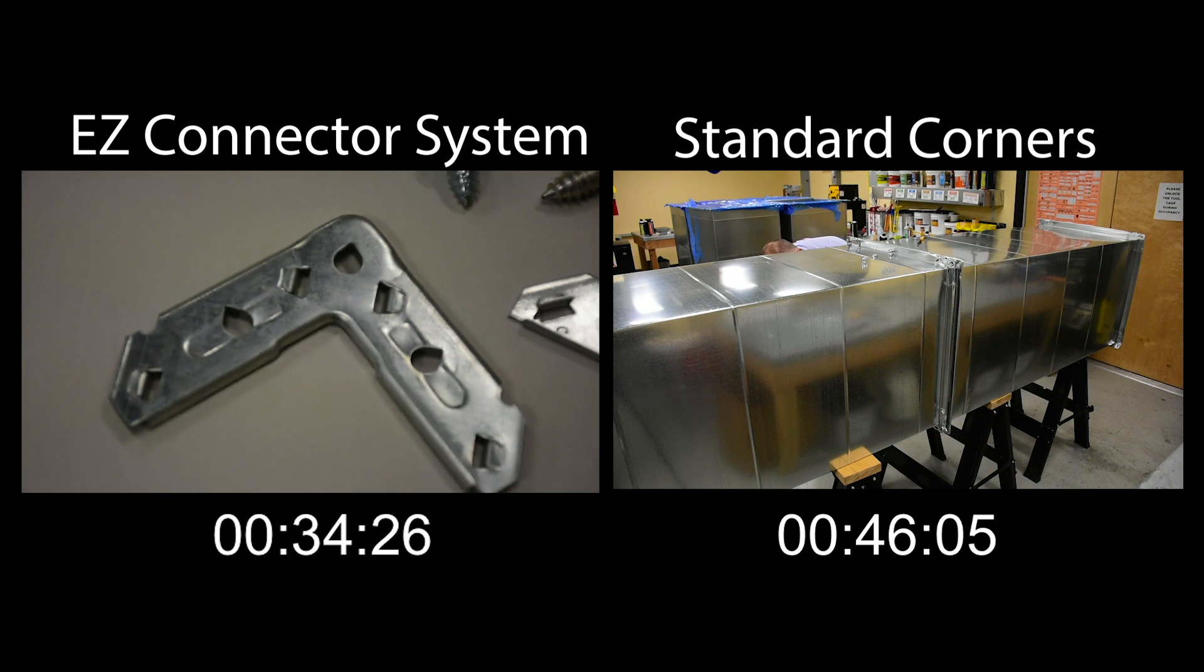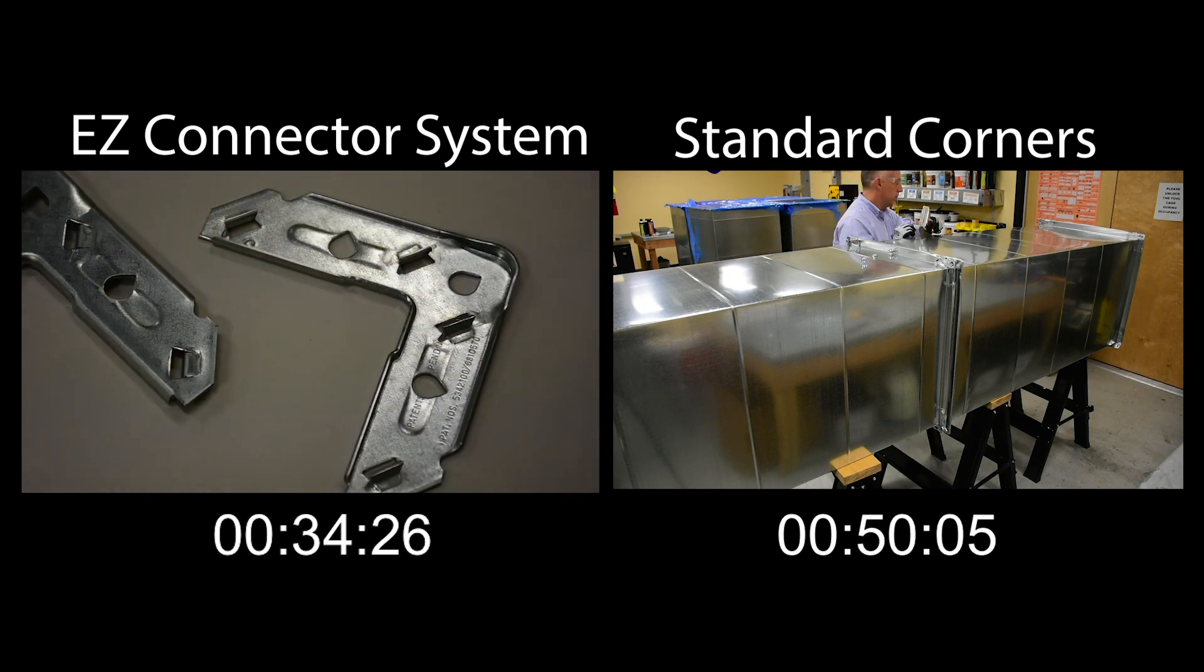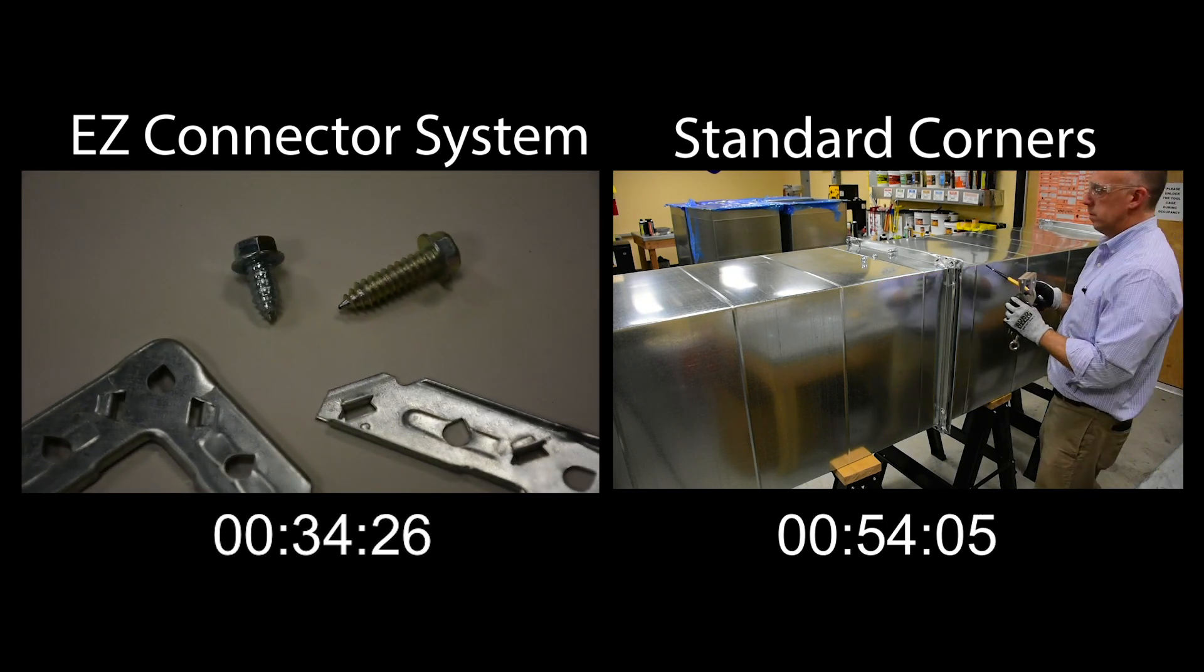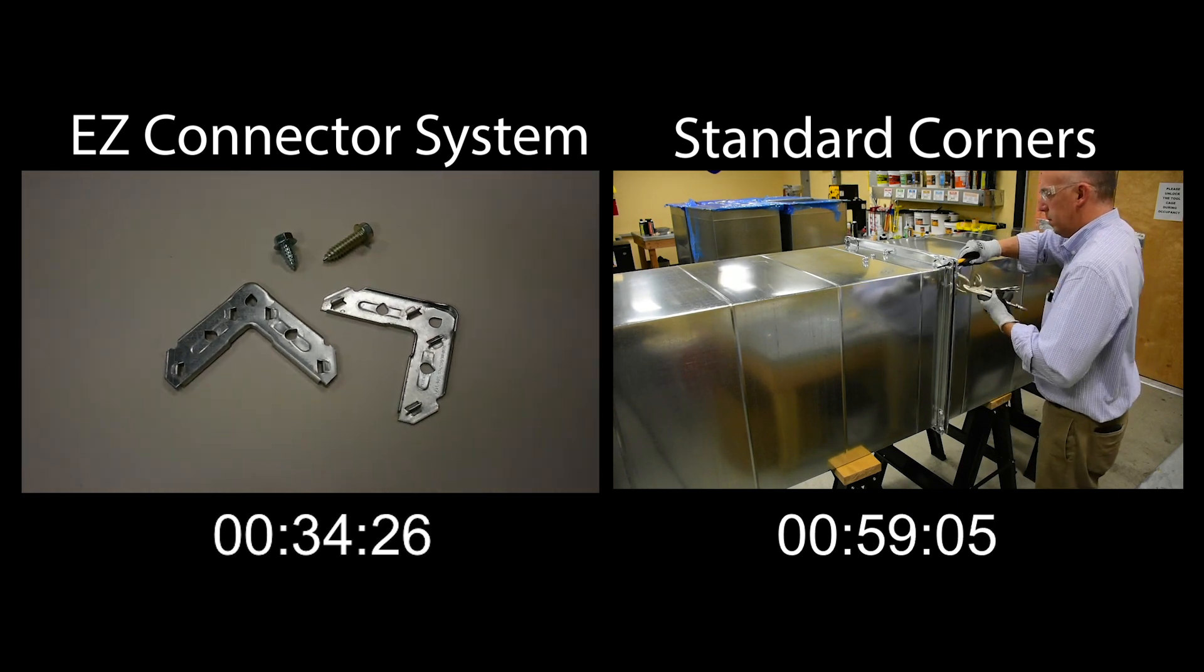Easy Connector corners have a patented teardrop shape cutout which, when used with a proprietary bolt, helps to pull the connection together and lock it in place. These precision engineered and stamped TDC and TDF corners can be used in automated corner crimping machines.